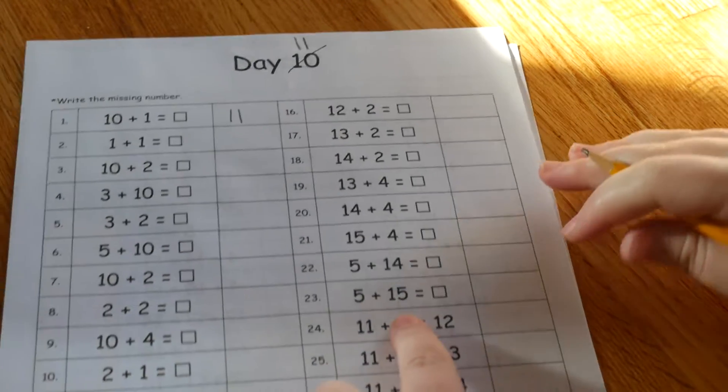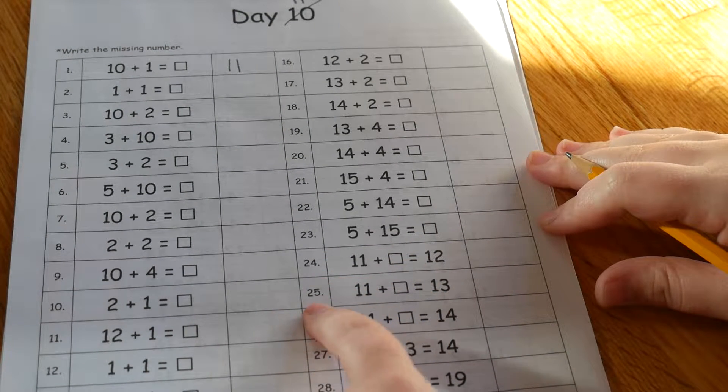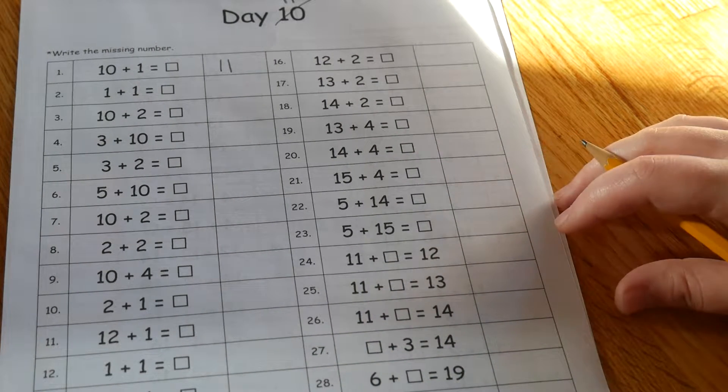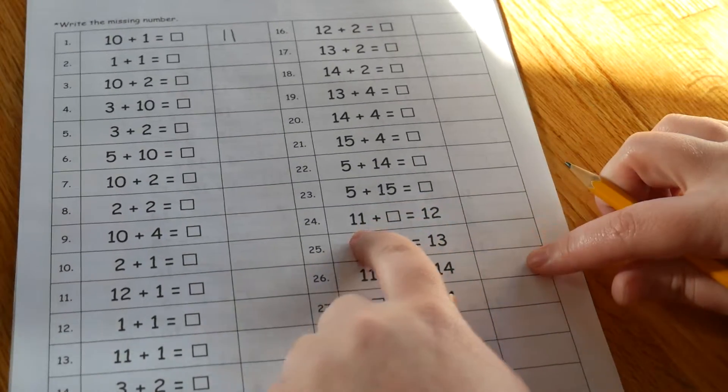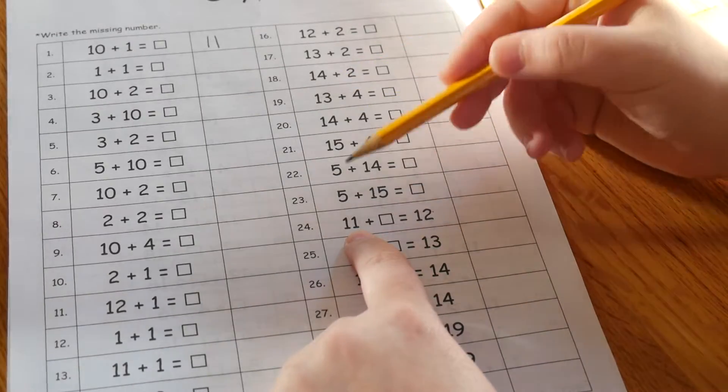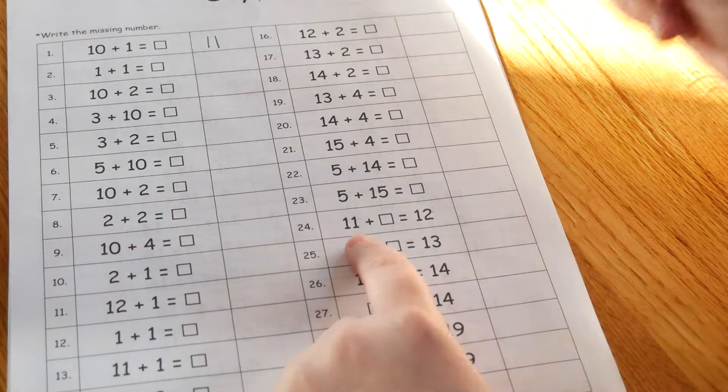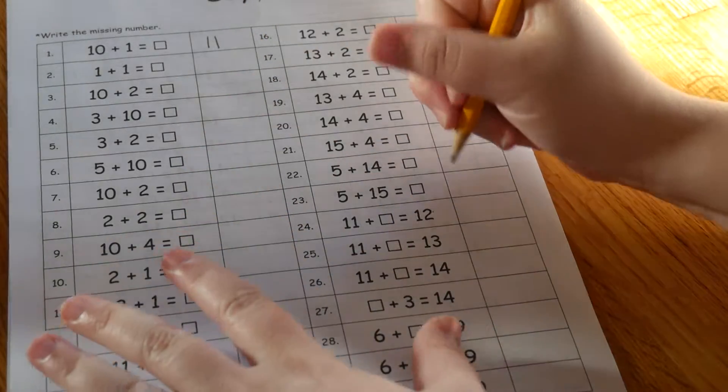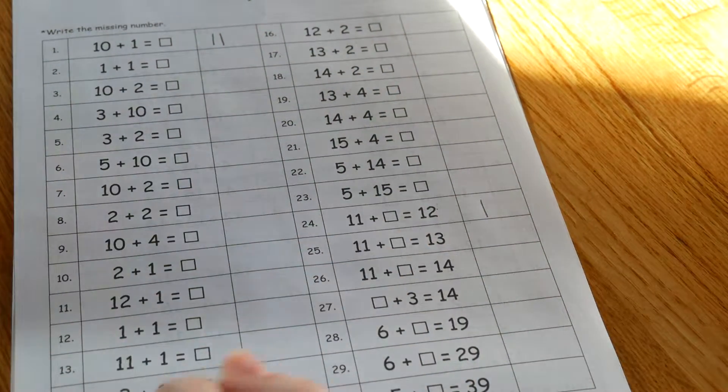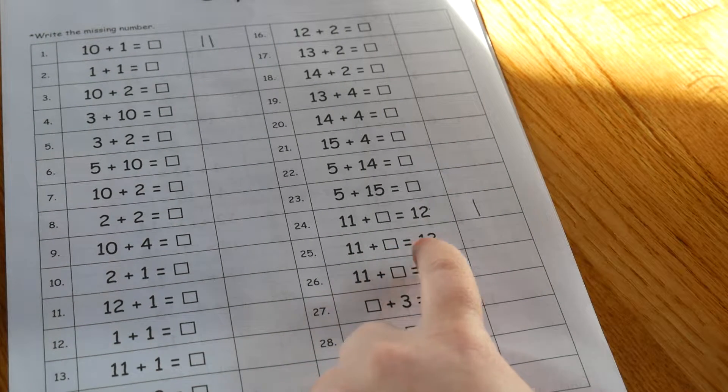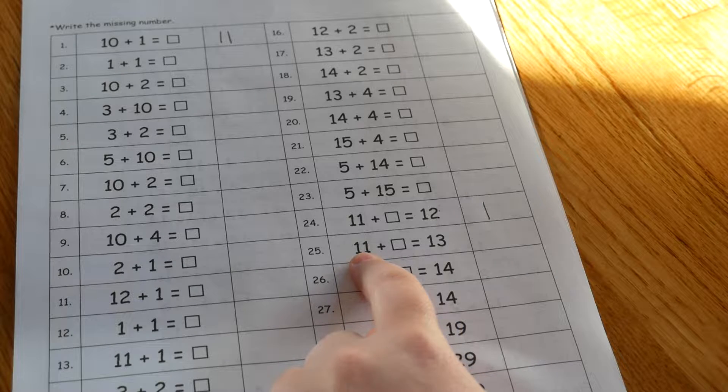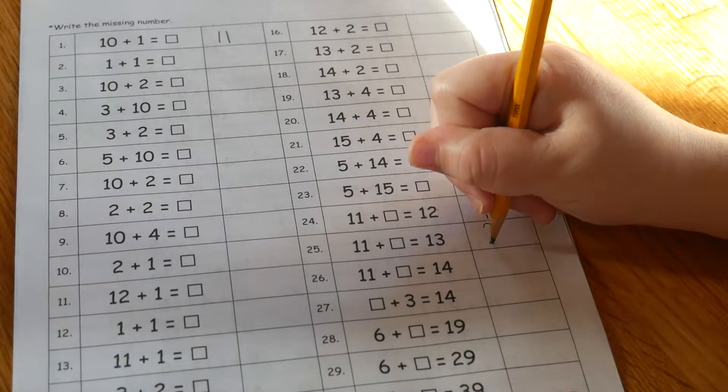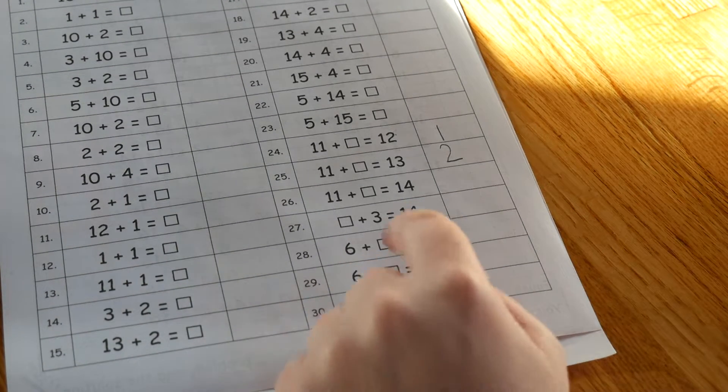I'll do some of these where you have to find the part. For problems 24 through 30, you're finding the missing part, not the total. We have 11 and we have to get to 12, so we count on: 11, 12. We only needed one. For 11 plus blank equals 13, same thing—we start at 11 and count on: 11, 12, 13. That's two.